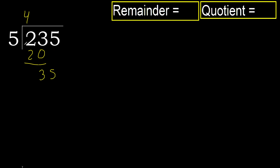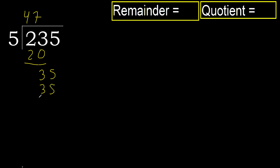35. 5 multiplied by 8 is 40 — that is greater. 5 multiplied by 7 is 35 — it's not greater, okay. Subtract: 35 minus 35 is 0. Next.